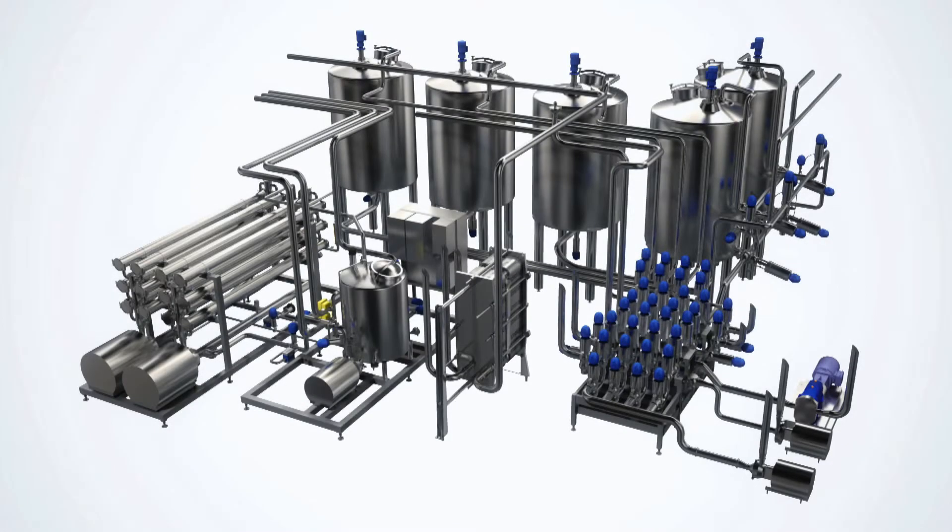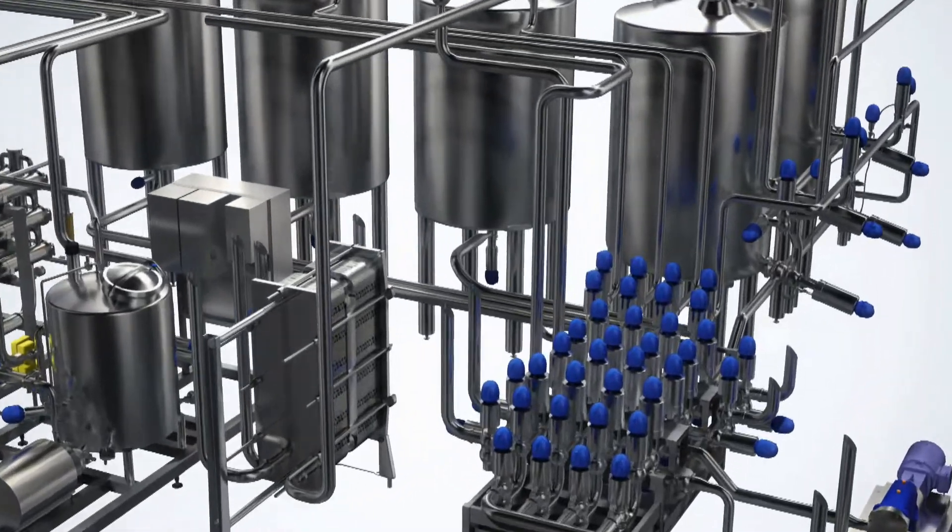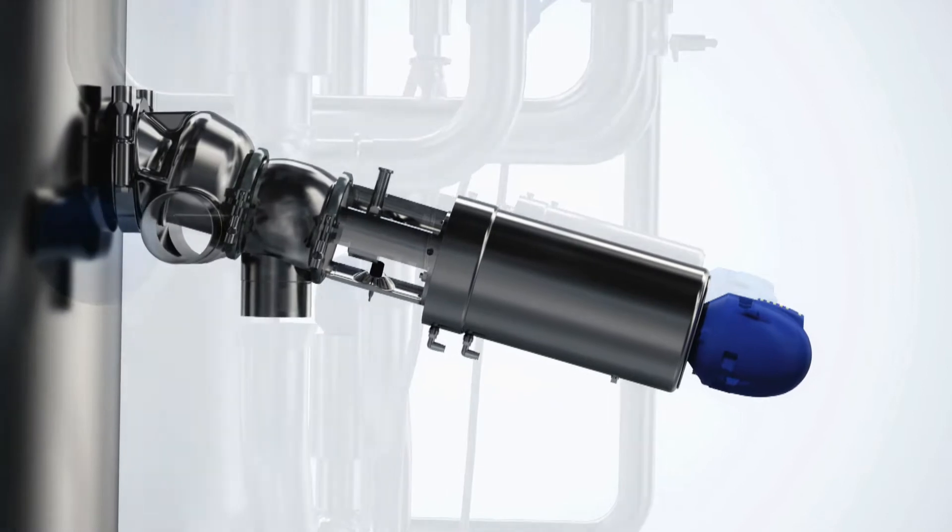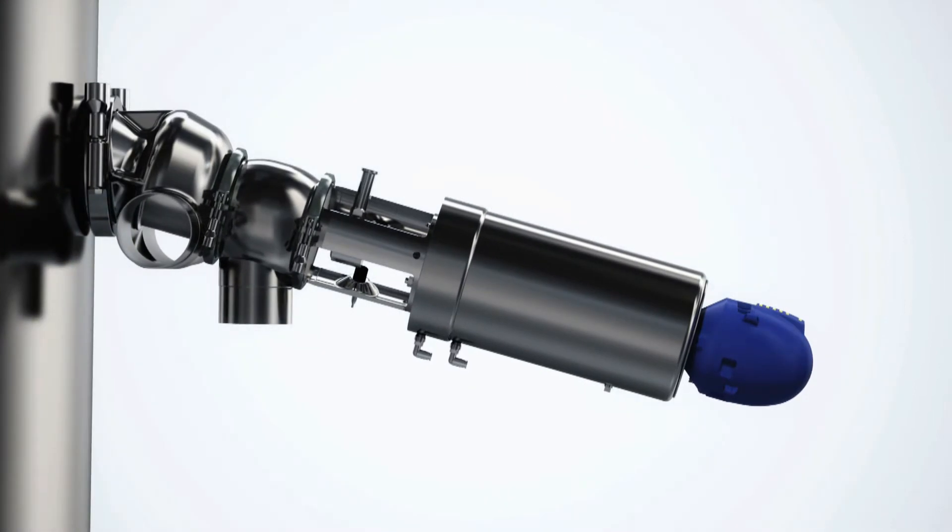The Alfa Laval unique mixed-proof horizontal tank valve is specially designed for horizontal mounting on the side of a tank or as a space-saving alternative at the bottom of a cone-formed tank. The design is the result of close cooperation with our customers.